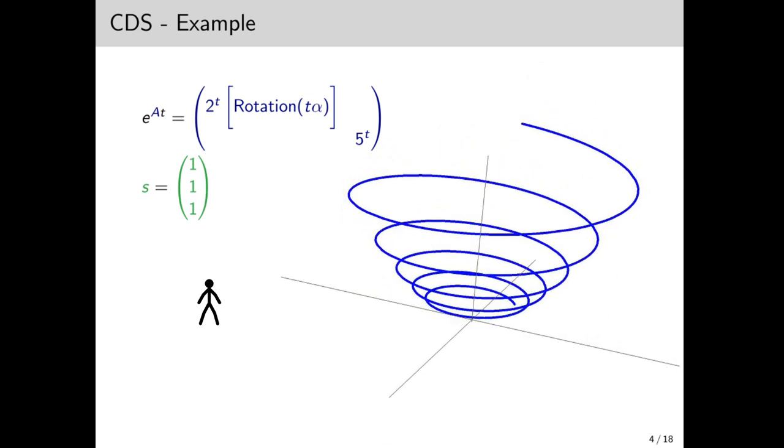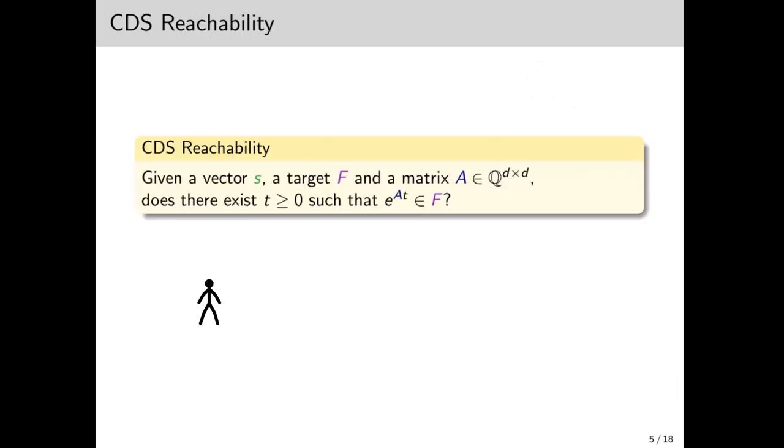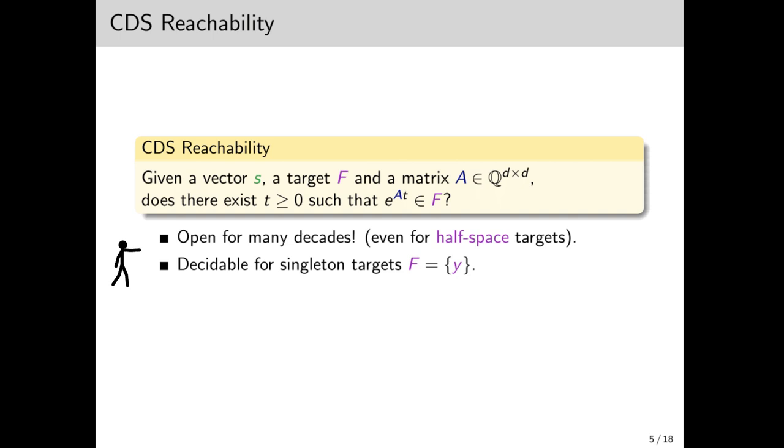Although it might not make this stupid sound effect if you tried at home. The fundamental problem we want to study is whether a given CDS hits a target, which is just some set. We call this problem CDS reachability. Given an initial vector s, a target f, and a matrix A, is there some t such that e to the at hits f?